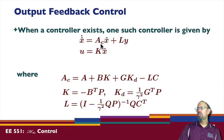x-hat dot is equal to ac times x-hat plus ly. Where now here, ac is given by a plus bk plus gkd minus l times c. So, it includes the best control, the worst disturbance, and the observer term.